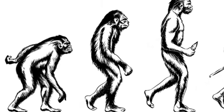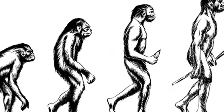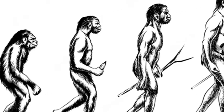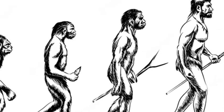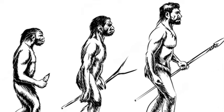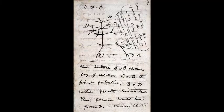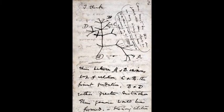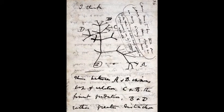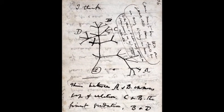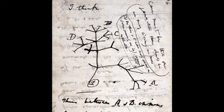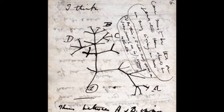Darwin's book barely hinted at the issue of human evolution — it was, and continues to be, controversial. Despite this, Darwin's theory of evolution by natural selection now forms the core of modern life sciences.